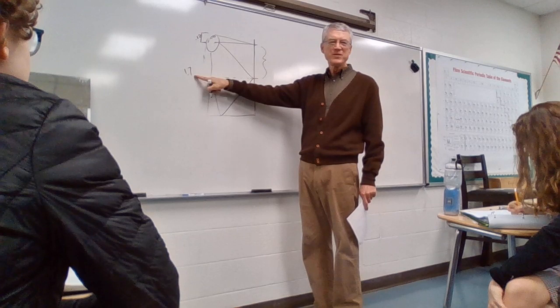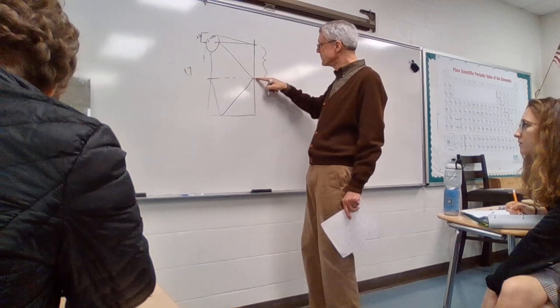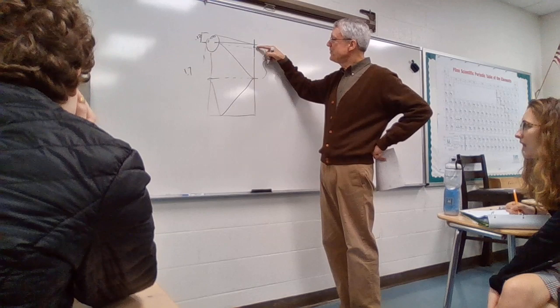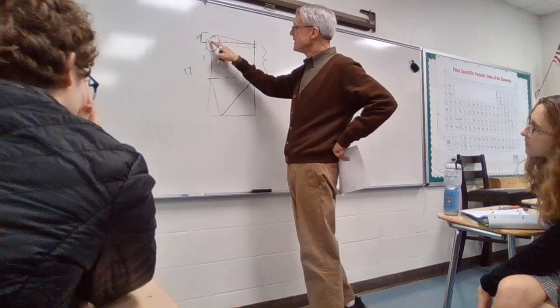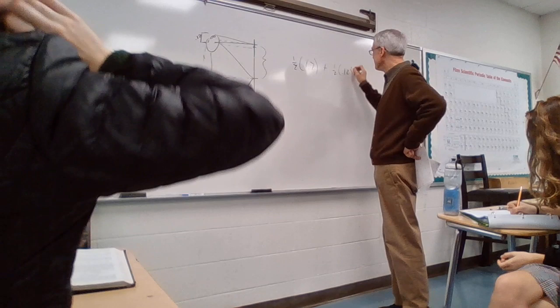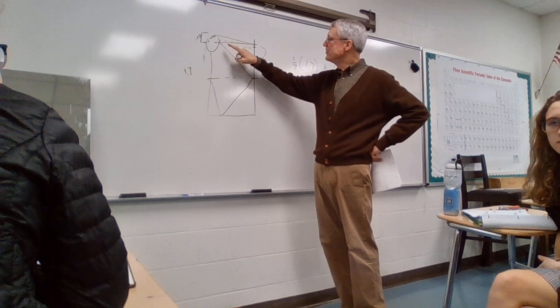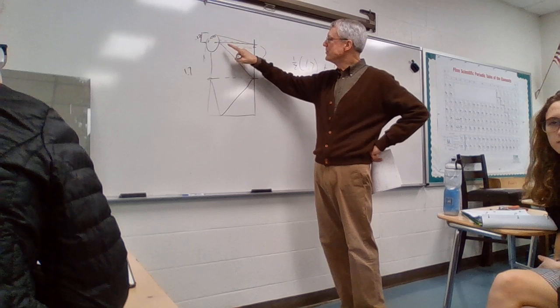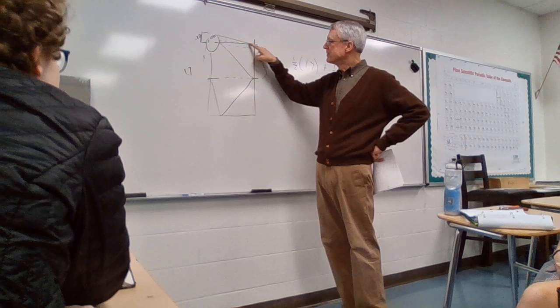Half of 1.7 is 0.85 meters — that's the lower portion of the mirror. Then you add half of the distance from her eye to the top of her head, which is half of 0.12. So the total mirror height is one-half of 1.7 plus one-half of 0.12. Those triangles show that the distance from her eye to that top point is half of 0.12.